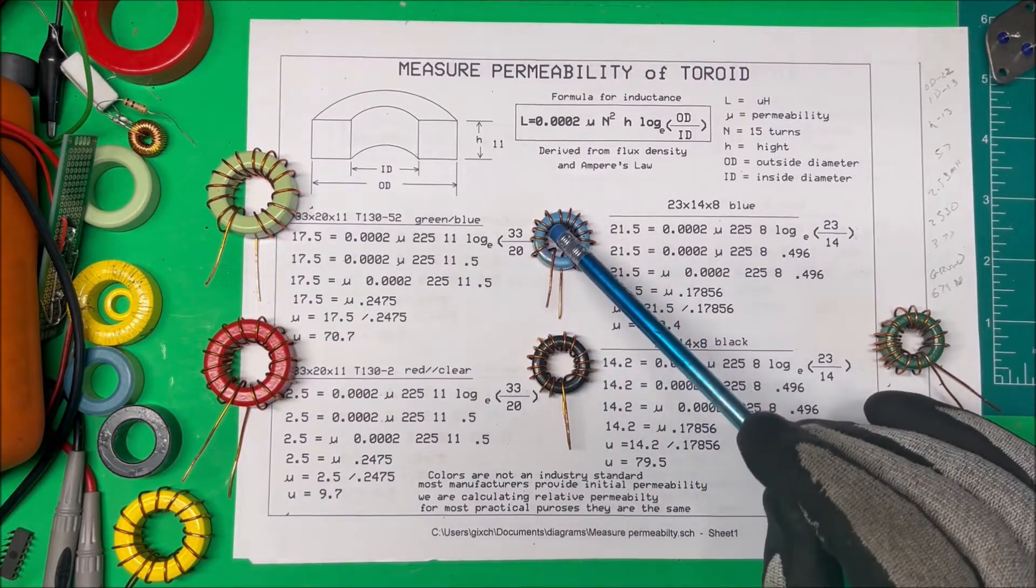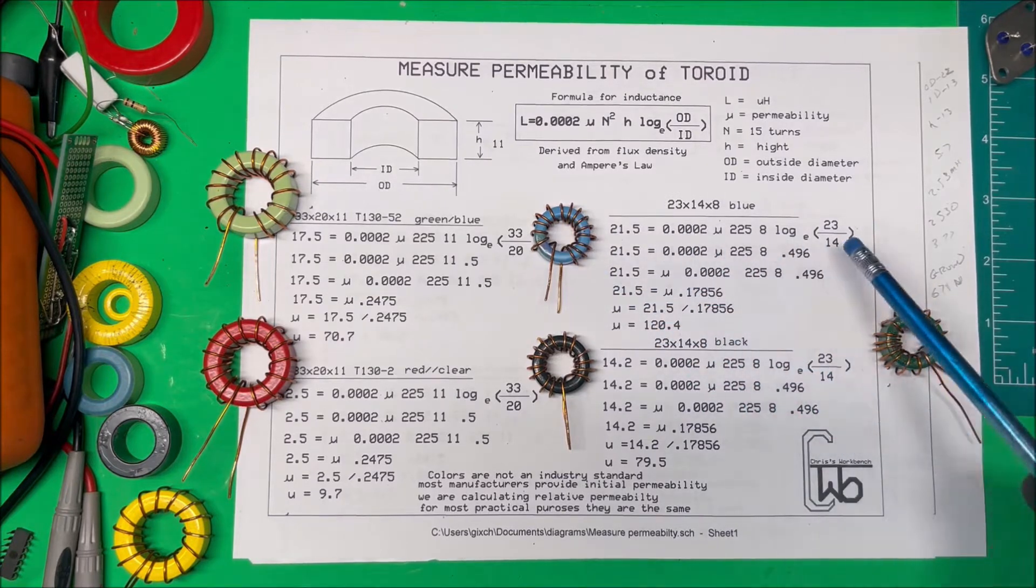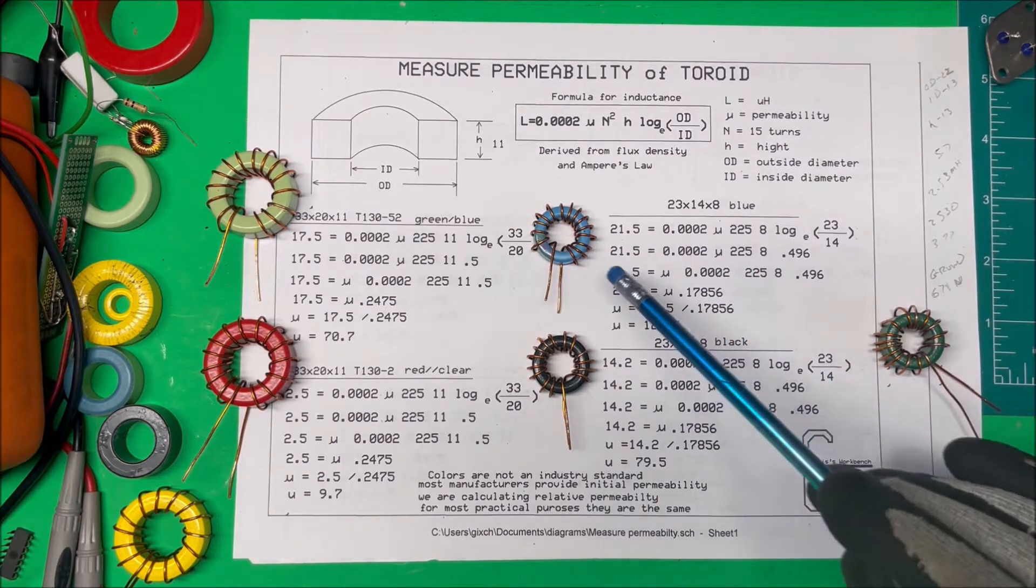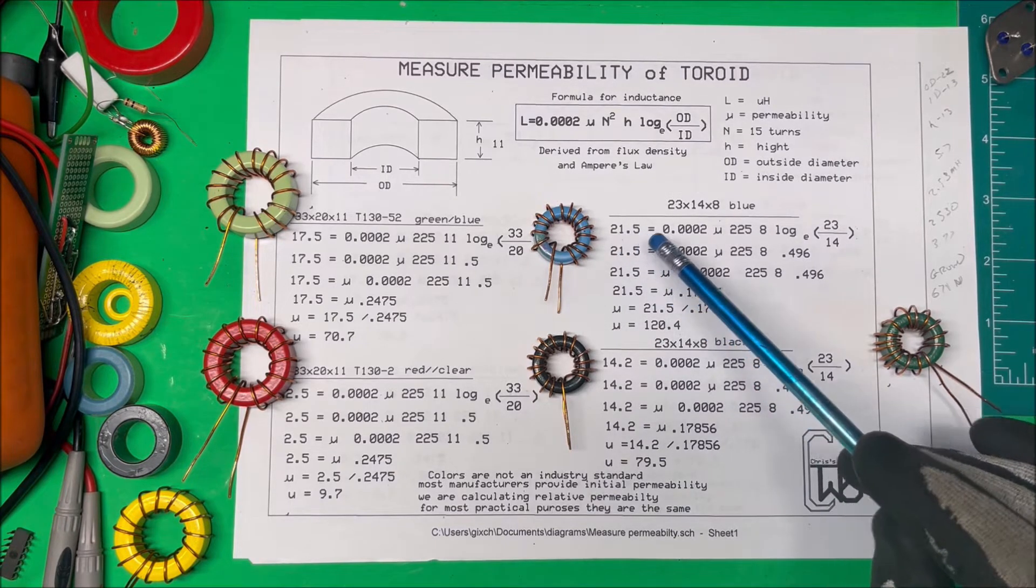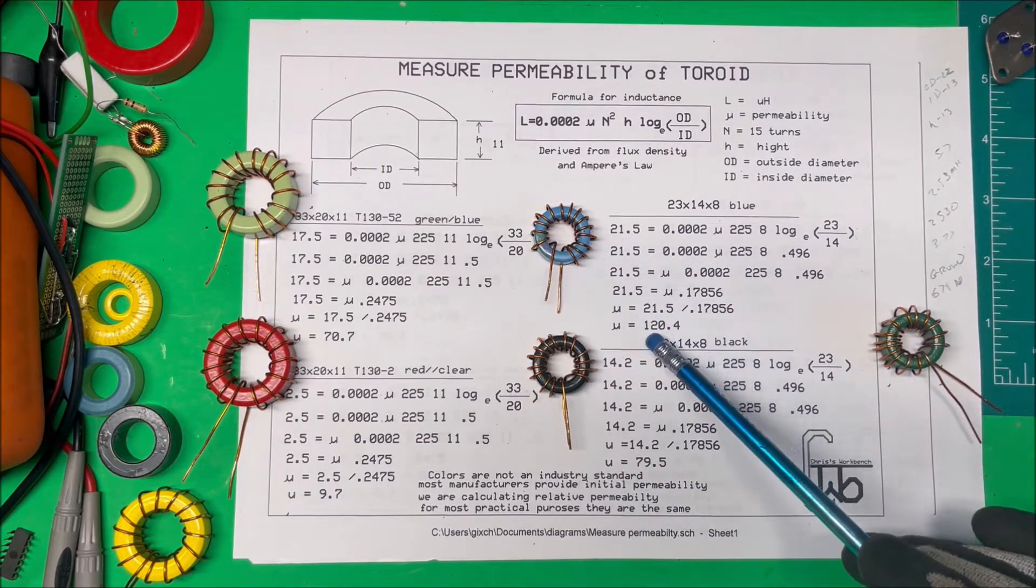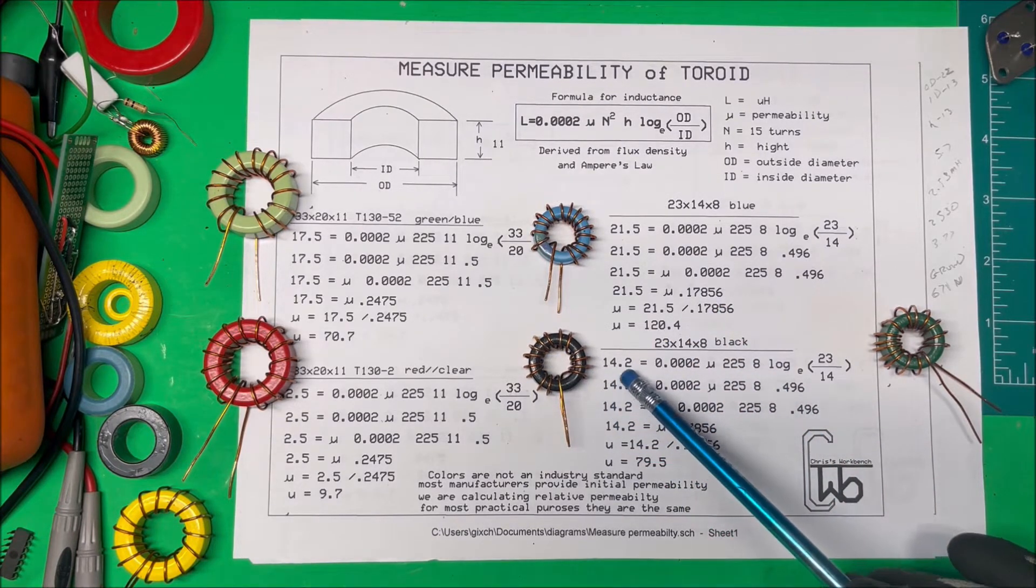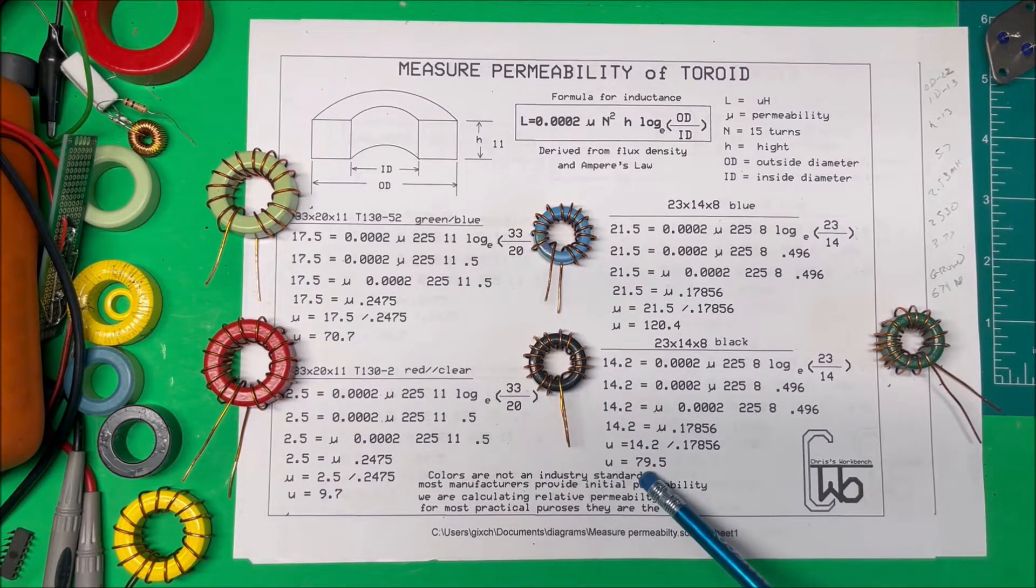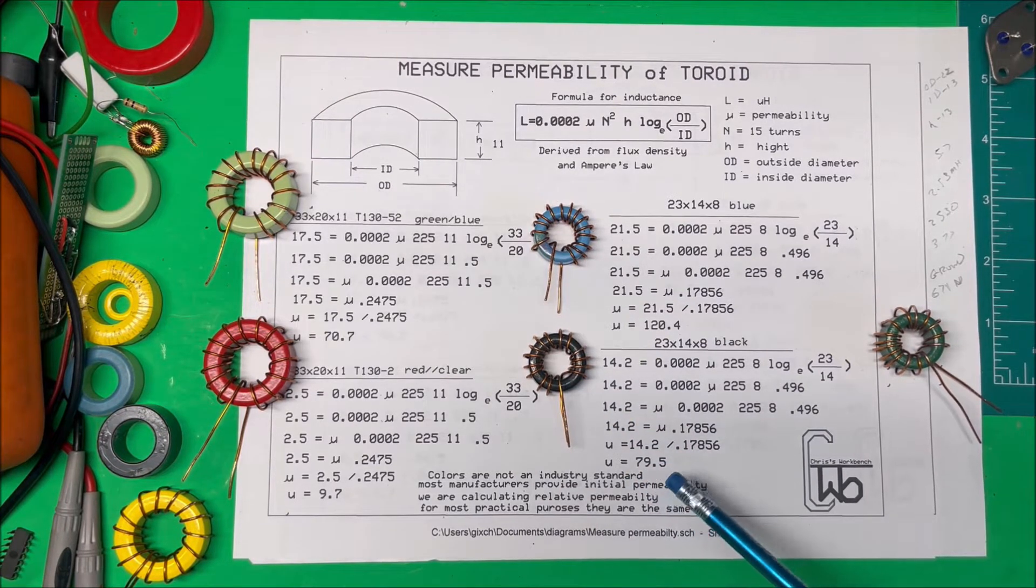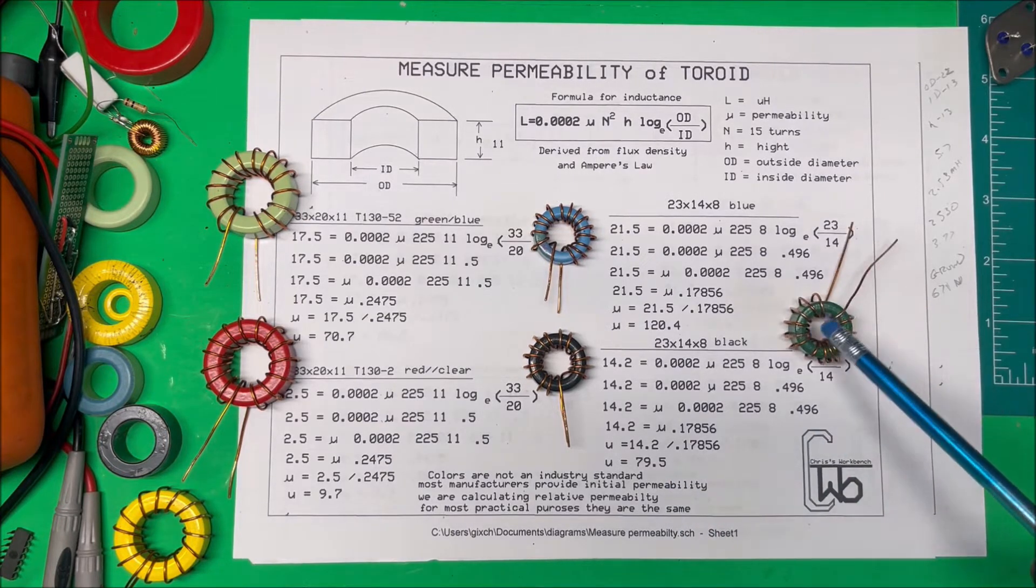Now these two I didn't know what they were. This blue one here, I measured it up and put all the numbers in there. It came out that it has an inductance of 21.5, so it has a permeability of 120. This one here has an inductance of 14, and the permeability on this one was about 79.5 to 79.8.